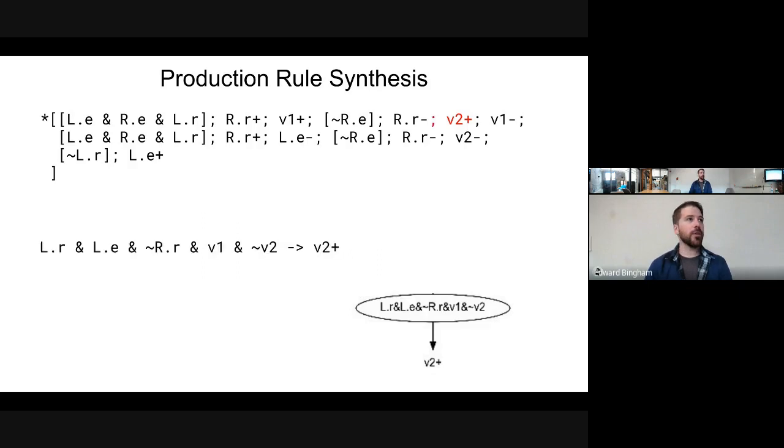Generally, we can take this predicate and stick it into the guard of a production rule, except a production rule cannot be self-invalidating. If you look at 'and not V2', the moment we get past the threshold voltage on V2 up, it will invalidate the guard and will no longer be driving V2. So V2 will not make it all the way up to VDD. We need to remove that last bit, and now we have a legal production rule.